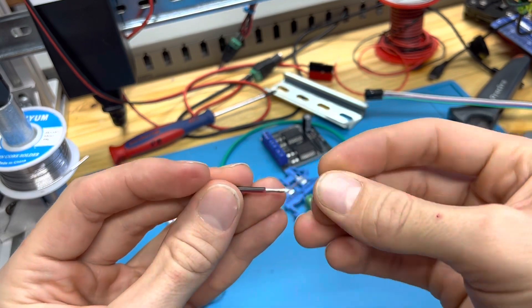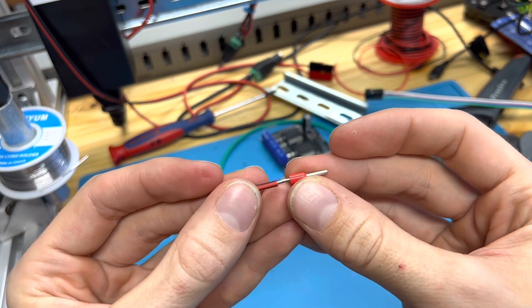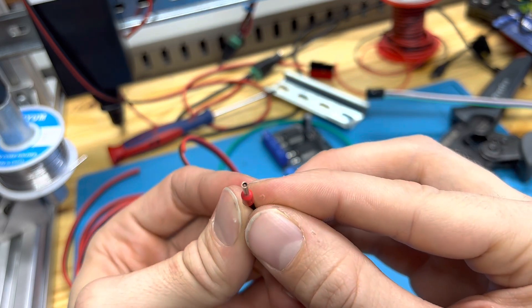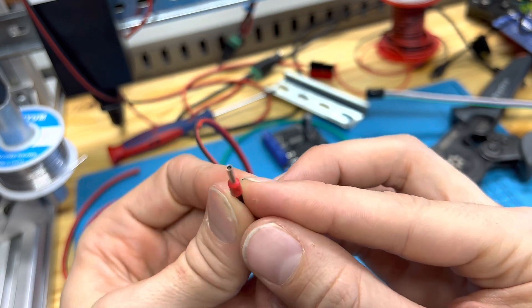Twist the wire up and feed it into the ferrule. You should be able to see the copper very close to the edge or maybe even protruding.